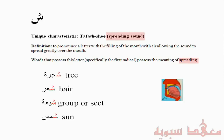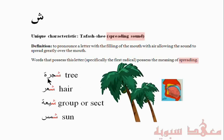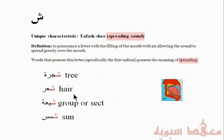There are some words that all start with the letter Sheen. First of all, we have a tree — Shejara. We know a Shejara spreads; as it grows, its branches spread out. Similarly with hair — hair is something that's all over the body, specifically all over your head, so it's something that spreads out.